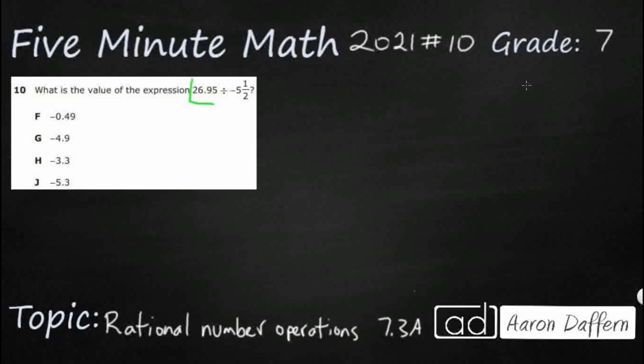So we have a basic operation here of division, no word problem. 26.95 divided by negative 5.5. You notice we've got a positive and a negative, so whenever we multiply or divide a positive and a negative, or negative and a positive, doesn't matter the order, that always turns into a negative.